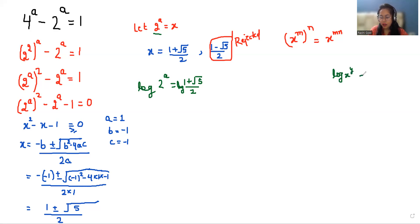So here we can write this as a·log(2) equals log((1 + √5)/2).